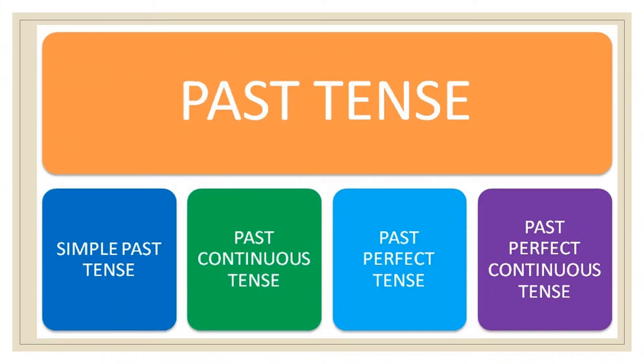The four categories into which past tense is divided are: simple past, past continuous, past perfect, and past perfect continuous.